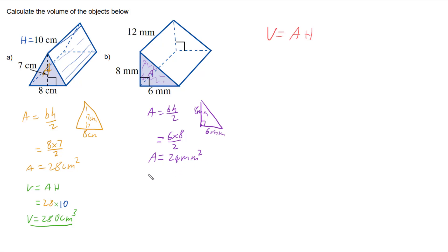We then need to go to our volume rule, which is area times by height, which means that we're going to take this twenty-four and we're going to multiply it by the height, which in this case is the twelve millimeters. So we're going to multiply it by twelve. So our volume of our second triangular prism is two hundred and eighty-eight millimeters squared.